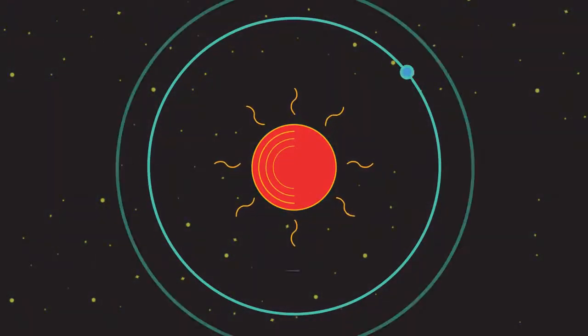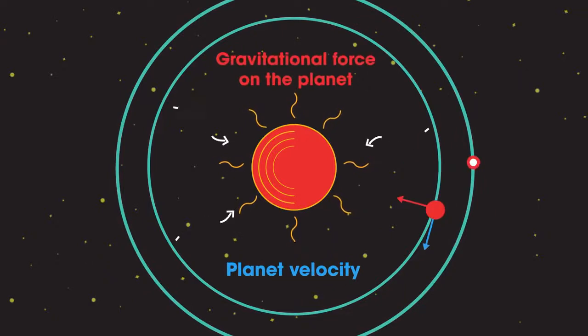The gravitational attraction between two objects is greater the shorter the distance between them. If the force between them is greater, then the object must move at a higher velocity to balance the higher gravitational attraction, otherwise the planet will spiral inwards and crash into the Sun.